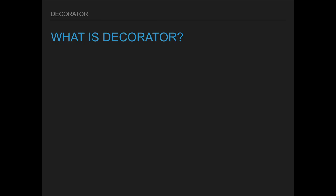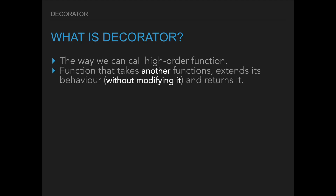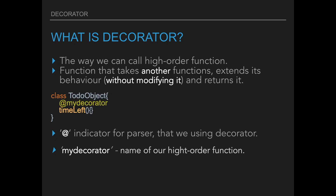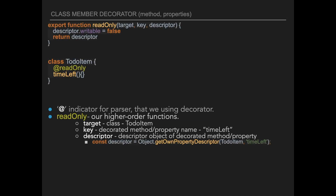Basically, a decorator is a higher-order function — a function that takes in another function, extends its behavior without modifying it (though not everyone agrees), and returns it. The @ symbol is the indicator for the parser that you're dealing with a decorator, and 'myDecorator' is the name of our higher-order function that will return the function, etc.